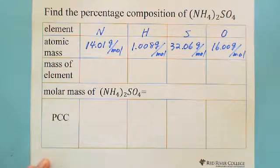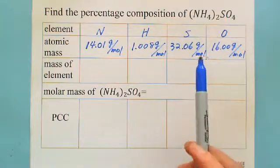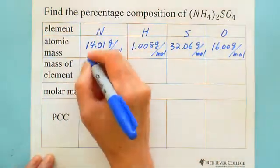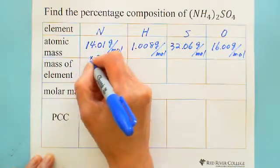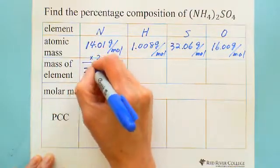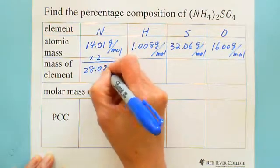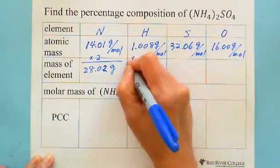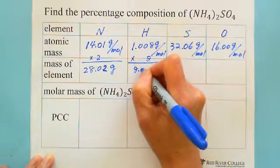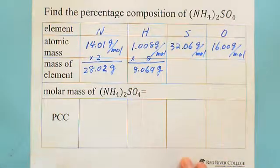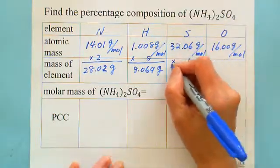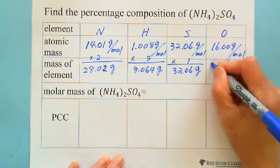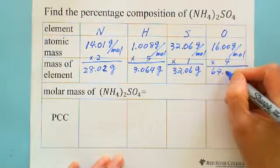Then we calculate the mass of each element. From the formula, nitrogen: you have two nitrogen, so multiply by 2 — that gives 28.02 grams. For hydrogen: you have 4 in each NH4 and 2 groups, so multiply by 8 — you get 8.064 grams. For sulfur, you only have 1 sulfur, so multiply by 1 — you still have 32.06 grams. For oxygen, multiply by 4 — you get 64.00 grams.